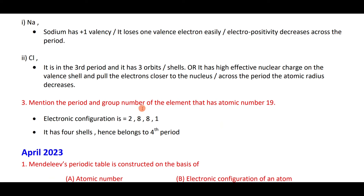The period and group number of the element with atomic number 19: its electronic configuration is 2,8,8,1 — it has four shells, so it belongs to the fourth period.